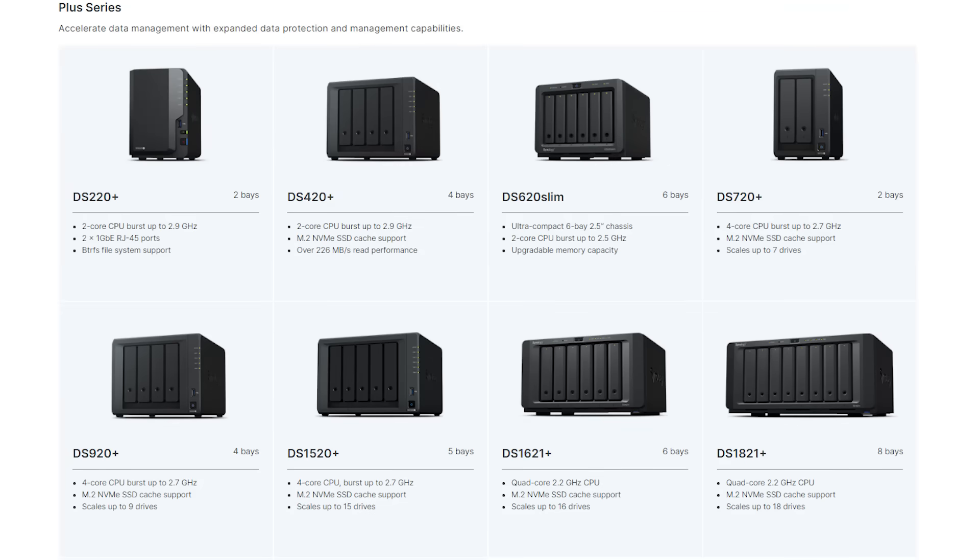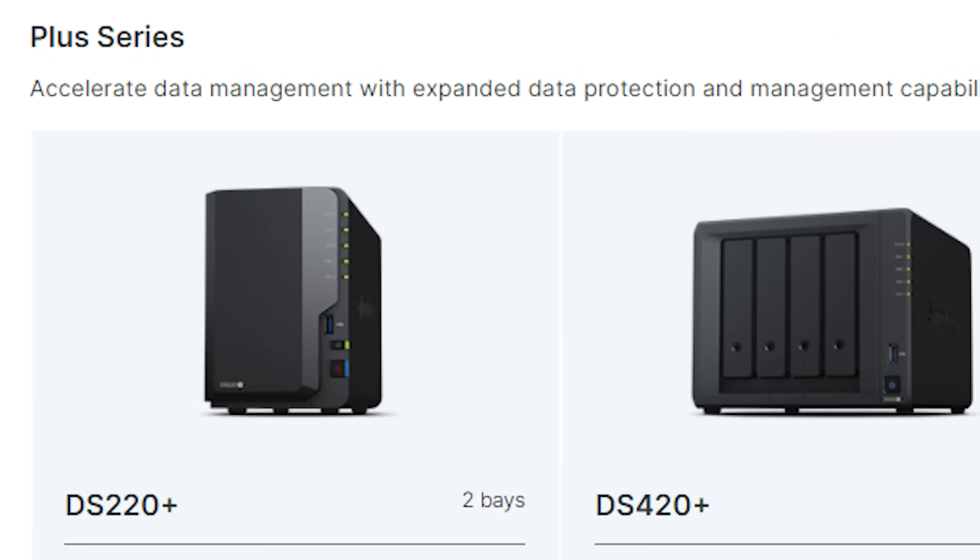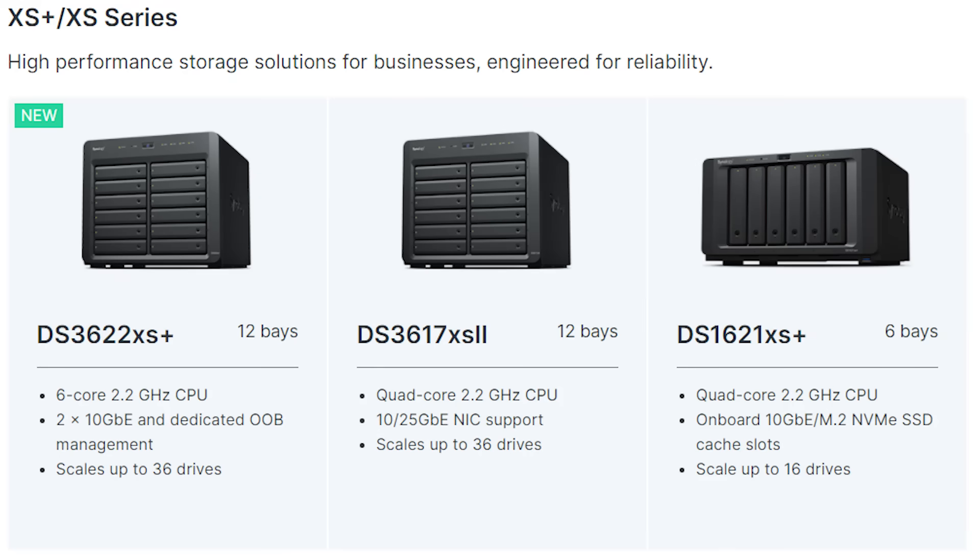After that, you get the Plus series — that's what this new device I'm reviewing is, the DS220 Plus. That means you move away from an ARM processor to an Intel processor, you get dual gigabit Ethernet, and you have the option to upgrade the RAM. Then at the top of the range you've got the XS series, which really maxes everything out — up to 48 gigabytes of RAM in some models, four gigabit or even 10 gigabit Ethernet ports, and you can use SSDs for caching. It's a monster of a device for people doing professional work at home or in an office.